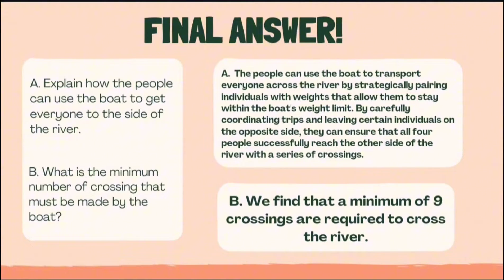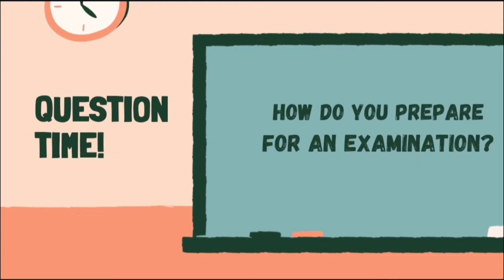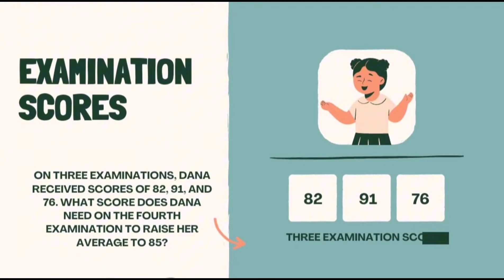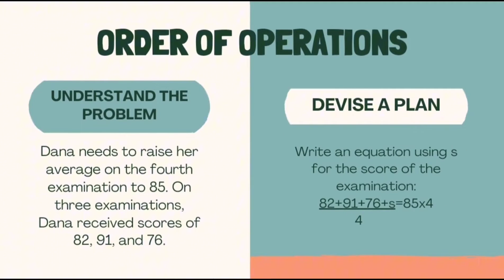Only one more problem remains, so let's finish strong. I have one last question for you guys: how do you prepare for an examination? Preparing for an examination is no easy task. You must put in the effort to review your past lessons in order to have a satisfactory grade. Take Dana, for example. On three examinations, Dana receives scores of 82, 91, and 76. What score does Dana need on the fourth examination to raise her average to 85? Let us now use Polya's problem-solving strategy one last time. To understand the problem: Dana needs to raise her average on the fourth examination to 85. We need to devise a plan to make her average reach 85.